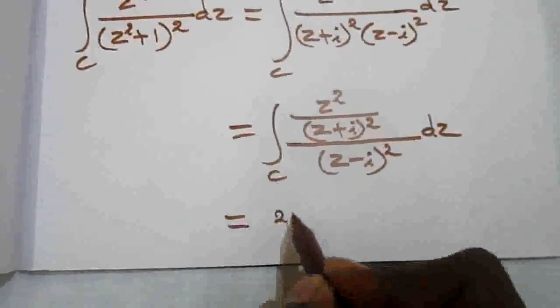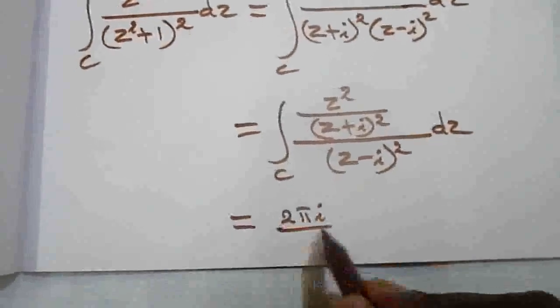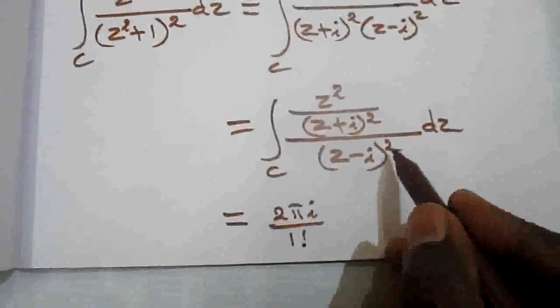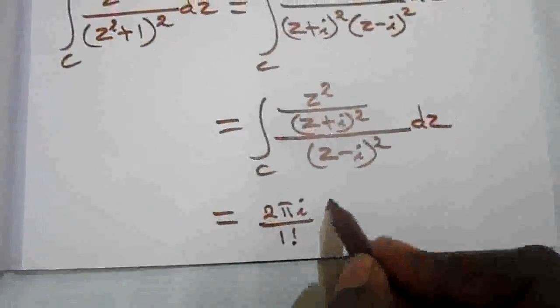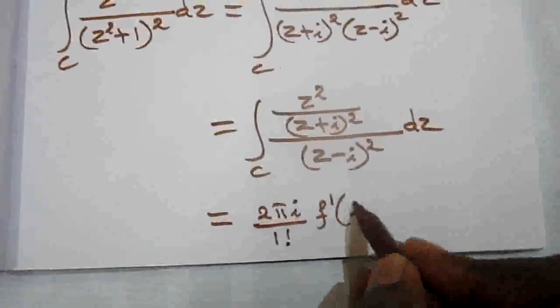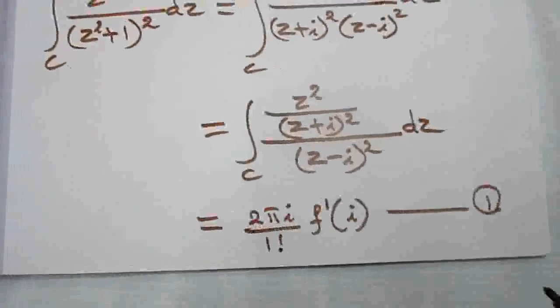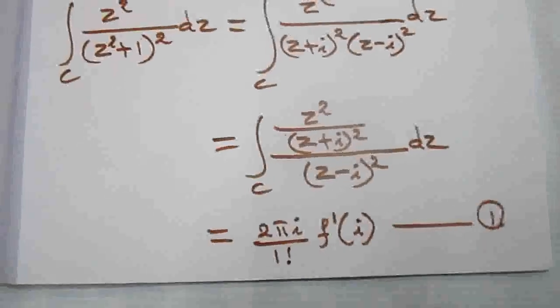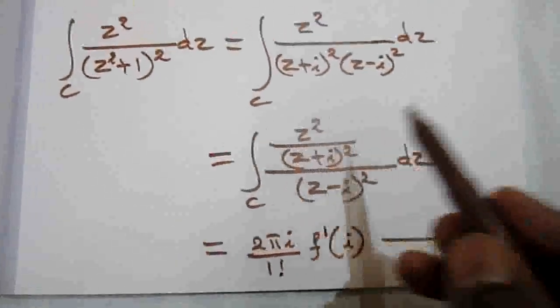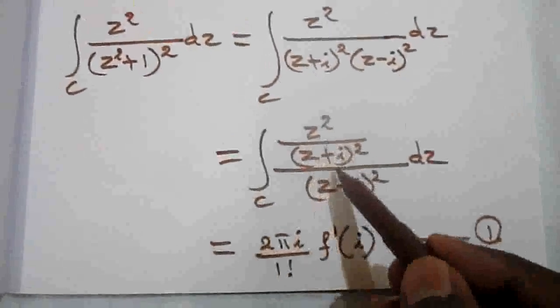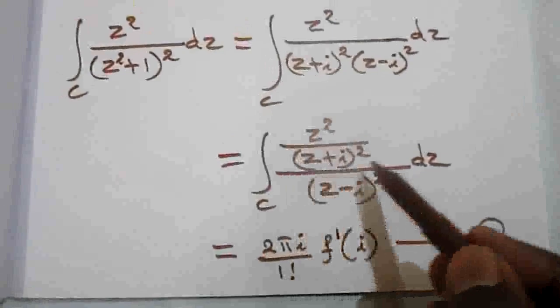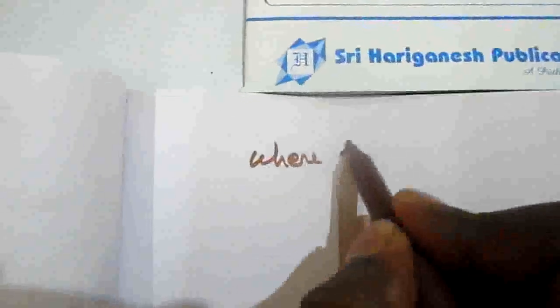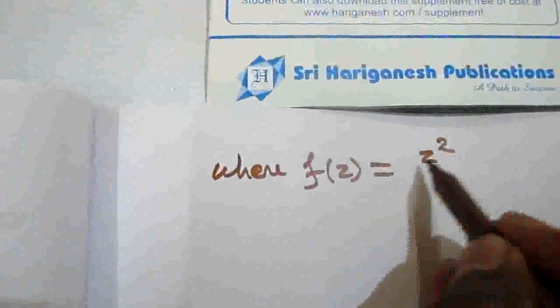By Cauchy's integral formula for derivatives, since the denominator power is 2, we use 1 factorial and the 1st derivative: the result is 2πi by 1 factorial times f'(a), where a = i. Here f(z) is the numerator part: f(z) = z squared divided by (z plus i) squared.